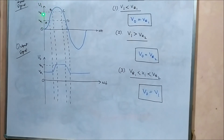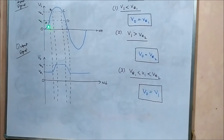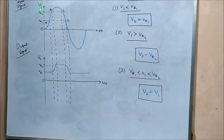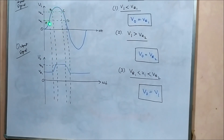For regions A to B and C to D, where the input signal lies between Vr1 and Vr2, the output follows the input signal waveform — the output traces the same shape as the input in those regions.